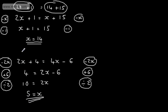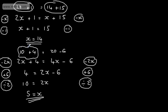Checking: 2 times 5 gives 10 plus 4, and that's equal to 4 lots of 5 which is 20 minus 6. That gives me 14, and this gives me 14, so we can see that 5 is the correct answer.